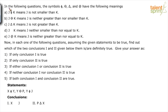Okay, look at this. In the following questions, the symbols — circle with vertical cut, circle with horizontal cut, triangle, space, and at-the-rate — have the following meanings.